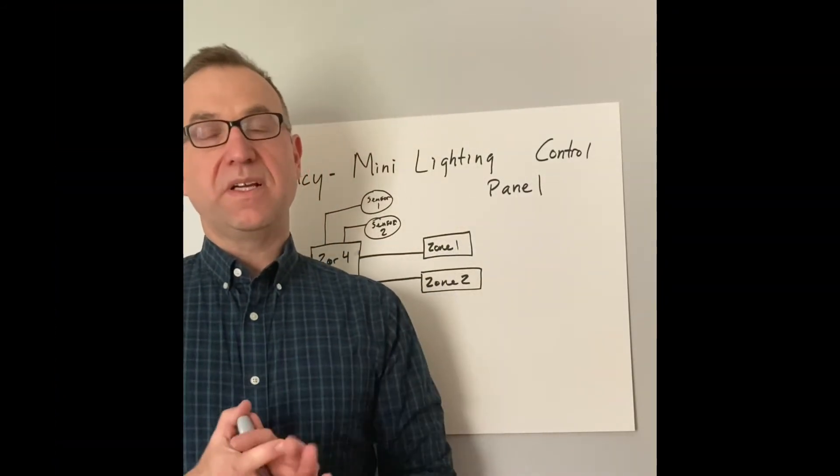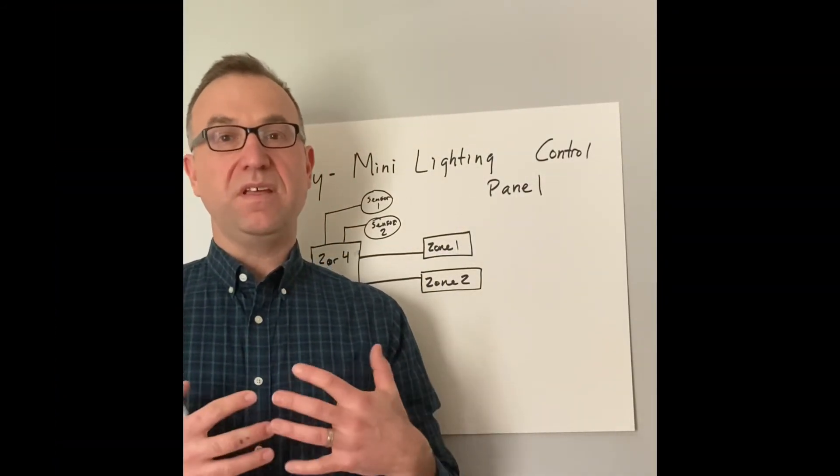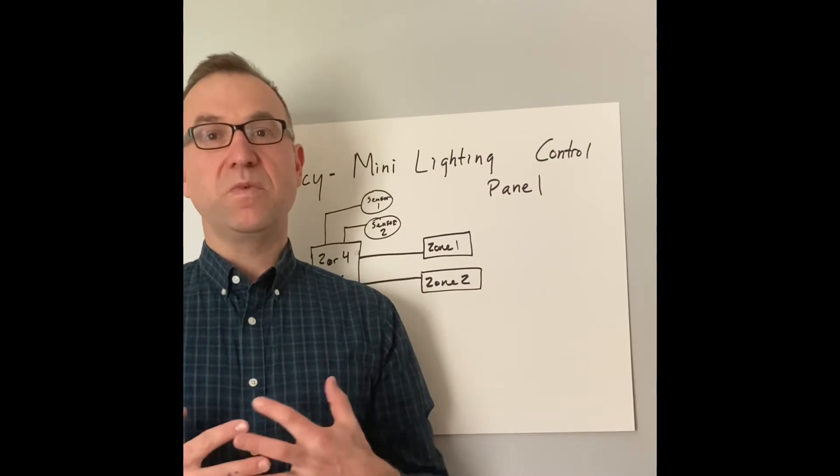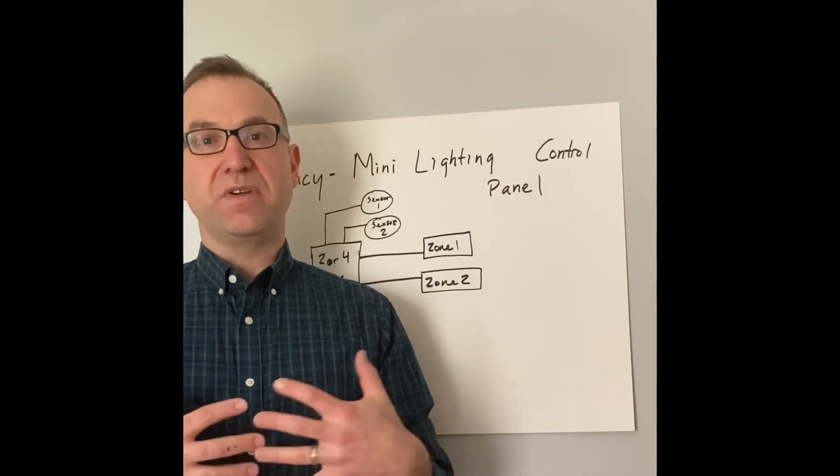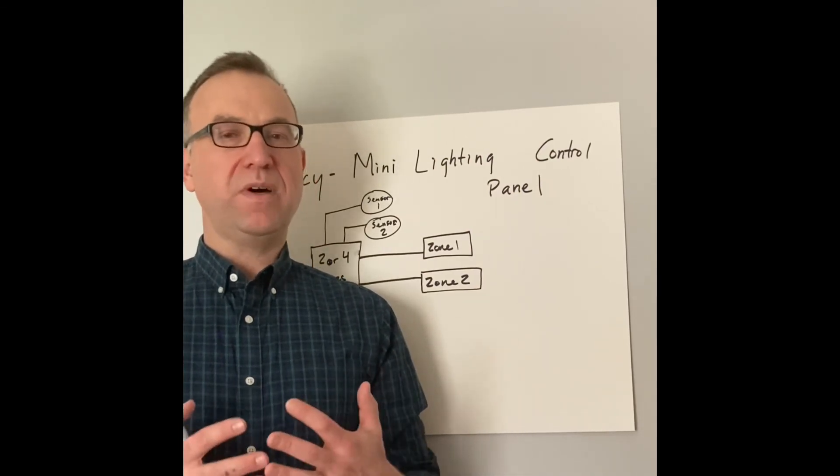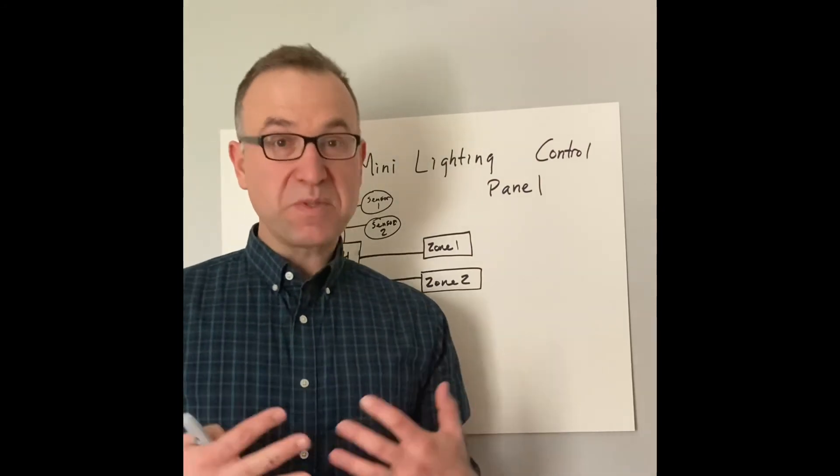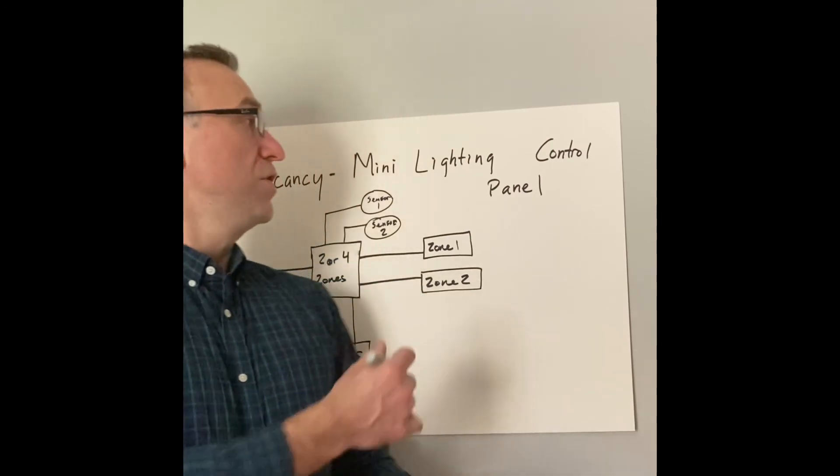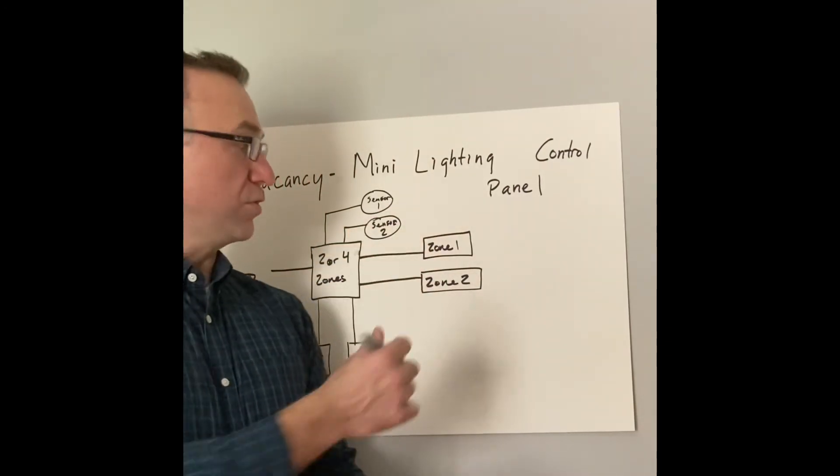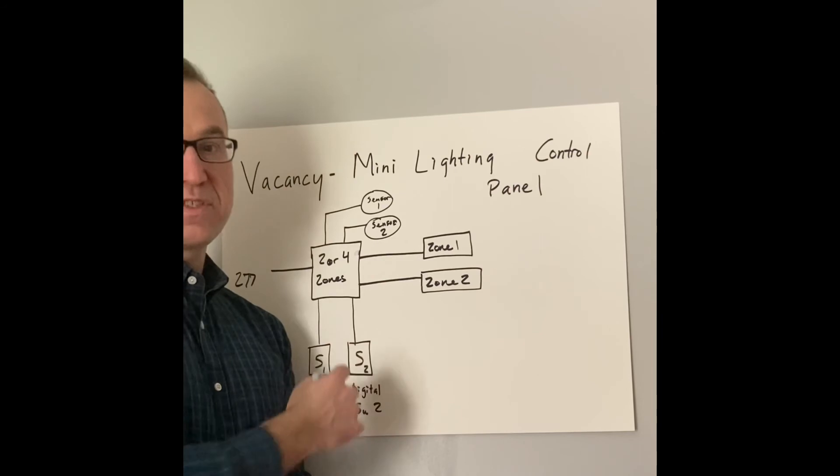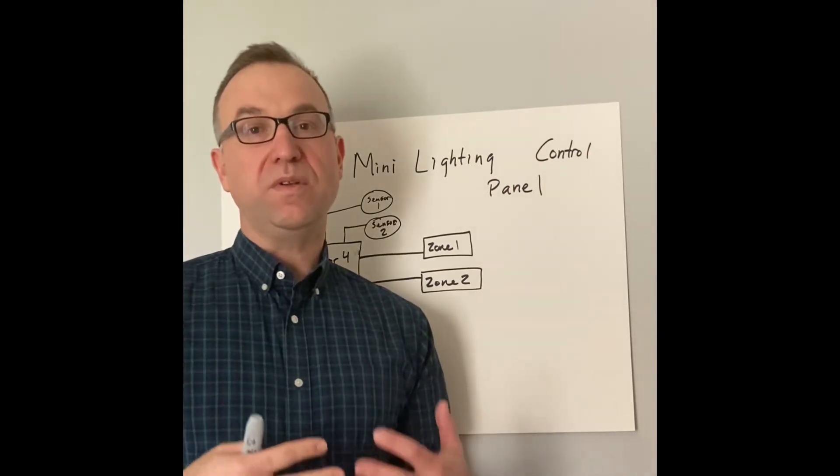All right. And then the last way to accomplish that vacancy setting is with a mini relay panel. Now, this is one where on projects, a lot of customers put up the most resistance because they say, well, why do I need this little mini relay panel? Well, it's because the things we talked about, we need a bigger room to control with perhaps multiple sensors, multiple zones of light and multiple switch locations, and then also dimming.